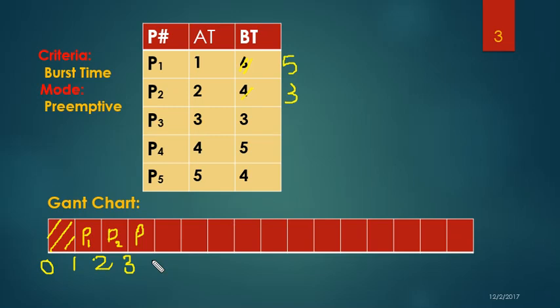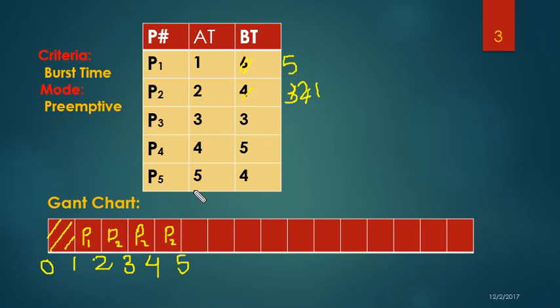It's now time 4 and P2's remaining burst time is 2. P1, P2, P3, and P4 have arrived since P4's arrival time is 4. At time 5, P2's remaining burst time is 1 and all five processes — P1, P2, P3, P4, and P5 — have arrived. The smallest remaining burst time is P2 with 1, so I'm going to write P2 here and P2 finishes at time 6. P2 is done.